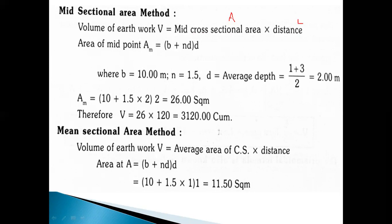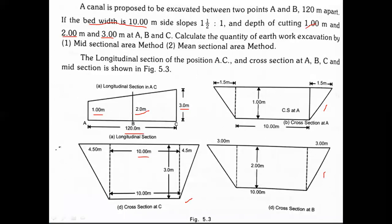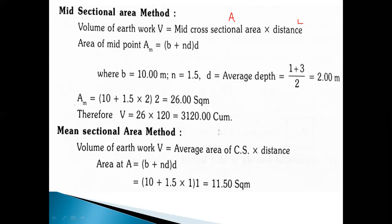Midsectional area method: Volume = mid cross-sectional area × distance. Mean depth Dm = (D at A + D at C) / 2 = (1 + 3) / 2 = 2 meters. Area Am = BDm + NDm² = 10 × 2 + 1.5 × 2² = 20 + 6 = 26 square meters. Therefore, volume = 26 × 120 = 3120 cubic meters.